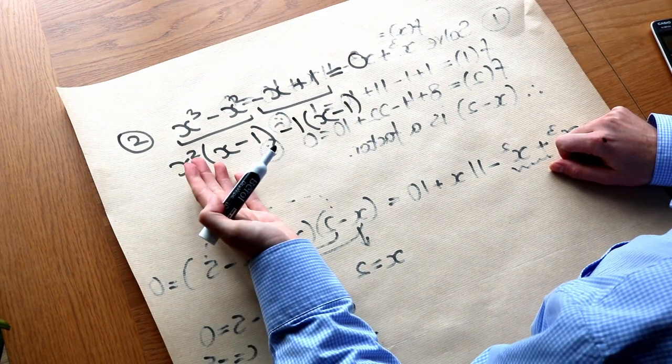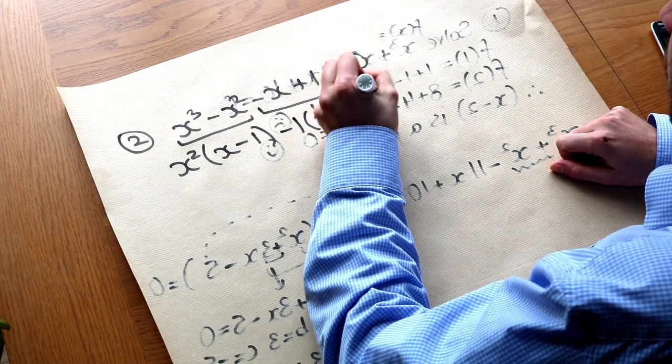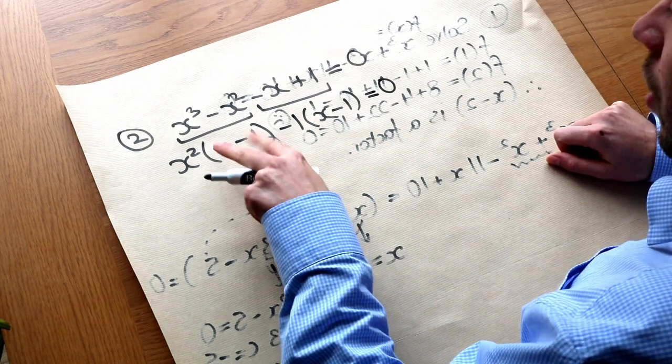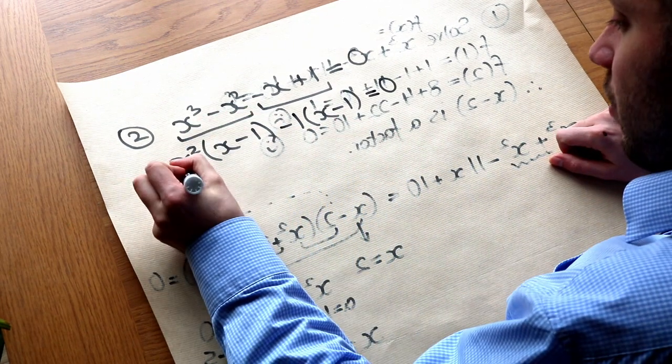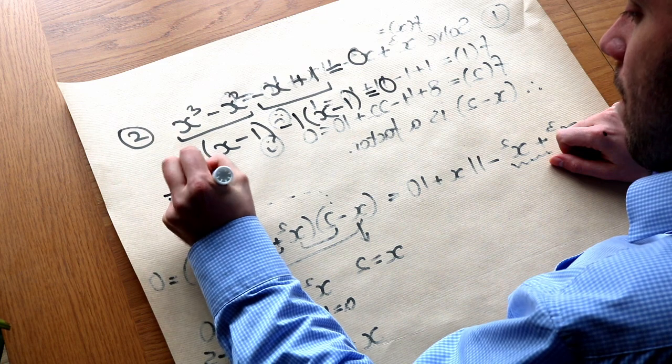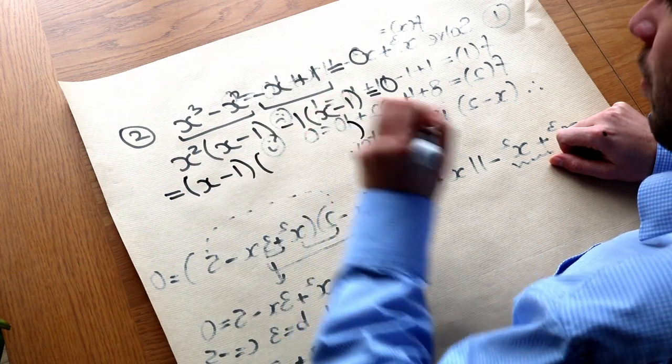And it happens to work here, but it often won't, and it usually won't. But now we've got a common factor of x minus one, so we factor that out with a second bracket.